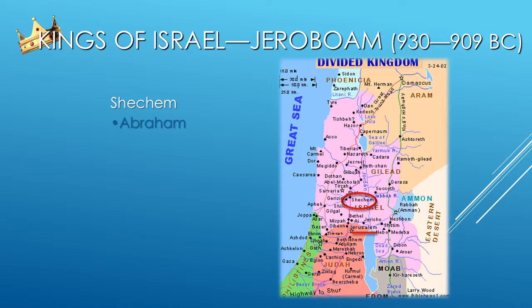But Shechem had a long and distinguished history. Remember Abraham, like a thousand years before this? Shechem was the first place he camped when he entered the Promised Land. He built an altar there and he worshipped Yahweh. Jacob's twelve sons pastured their flocks in this area. Shechem became the earliest center of worship for the twelve tribes after the Israelites entered the Promised Land, and it was later designated as a Levitical city of refuge in Joshua chapter 20.